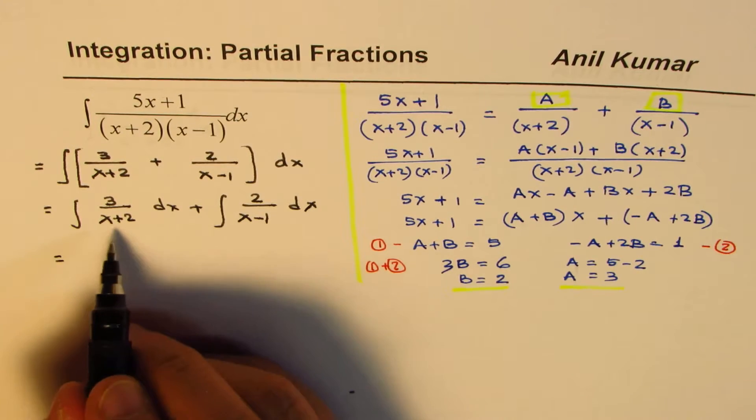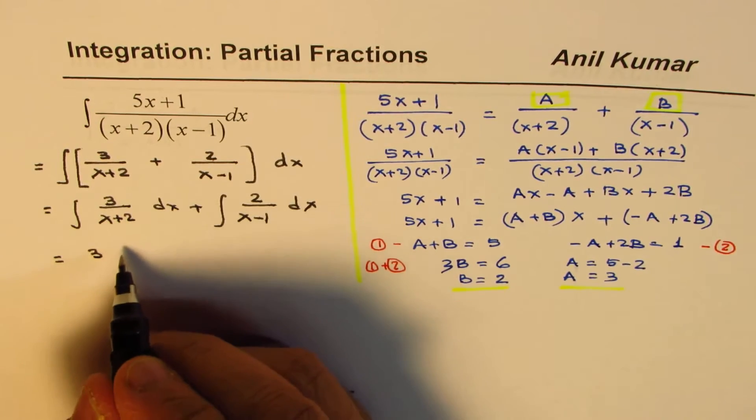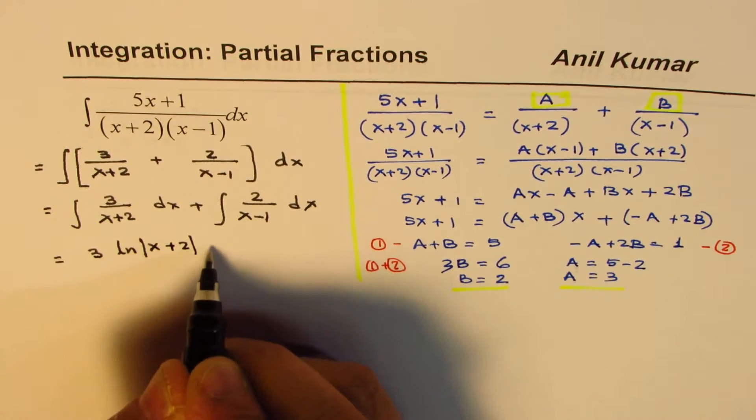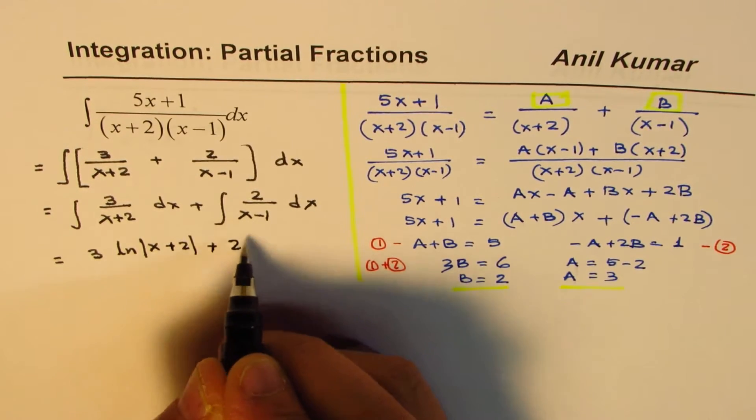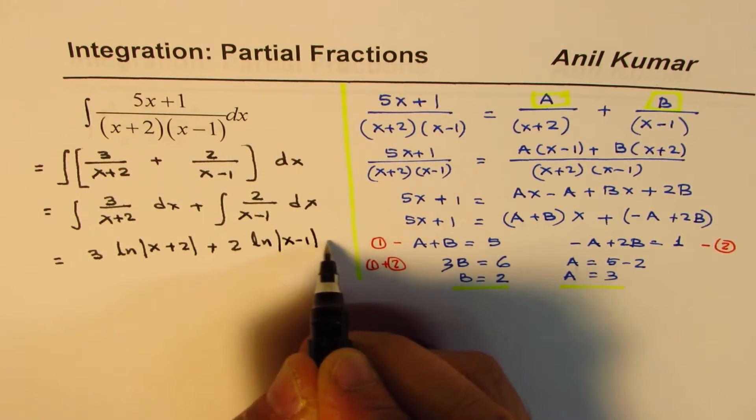And that gives you, if you find the integrals, you can substitute u as x plus 2. You get 3, and you can use the direct formulas, ln, positive absolute value of x plus 2, plus ln, two times, two times ln, positive value of x minus 1, plus c.